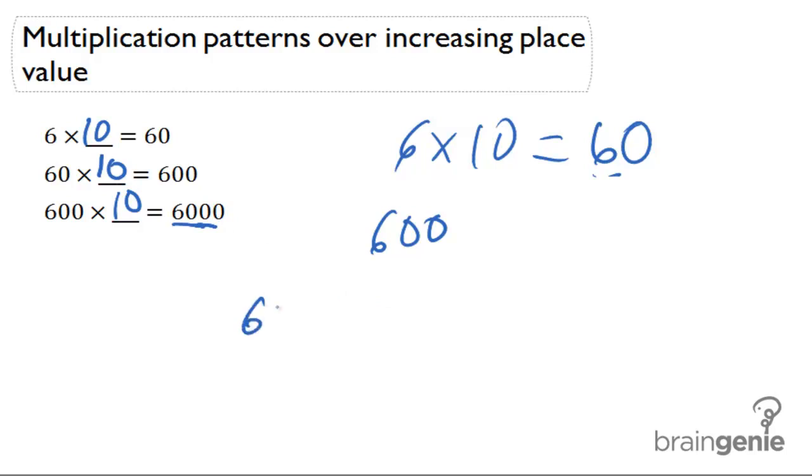When you multiply 600 times 10, you have 1 times 600, which gives you the same number, 600. Then you have that additional place value from the 10, and you put a 0 right there. So that's a very quick way to multiply with 10s to get increasing place value.